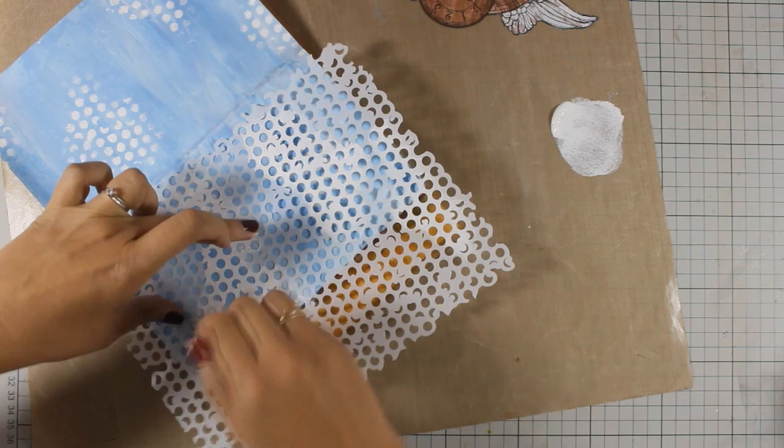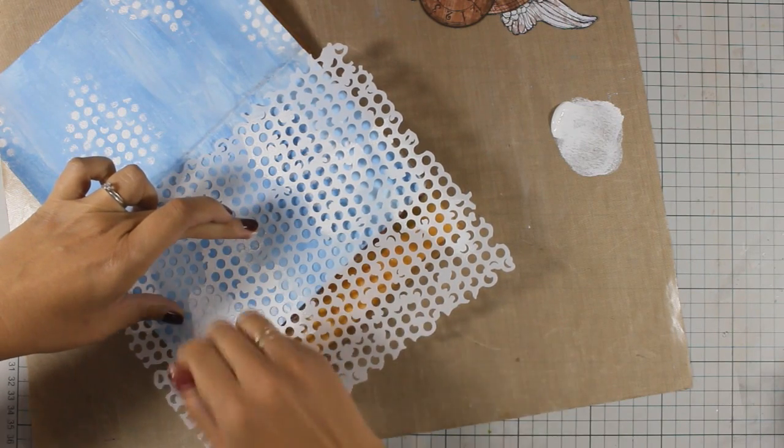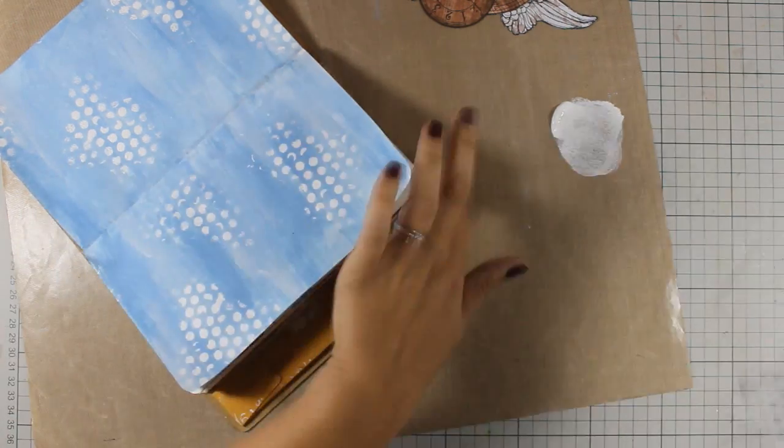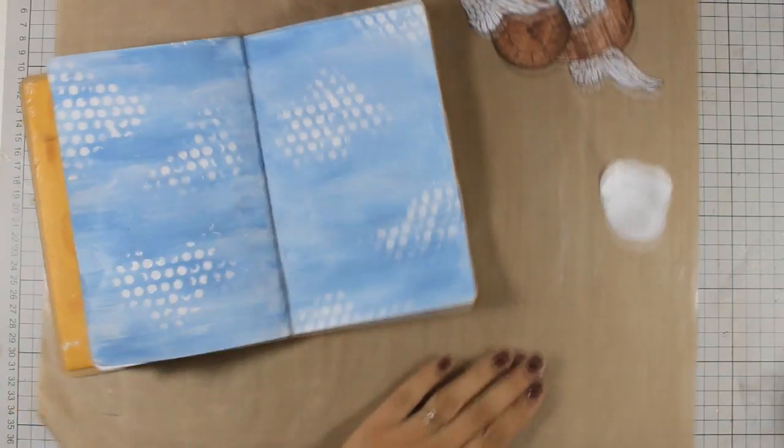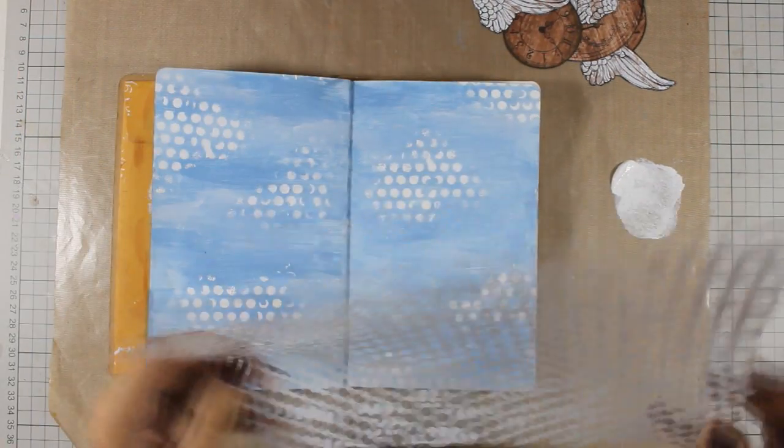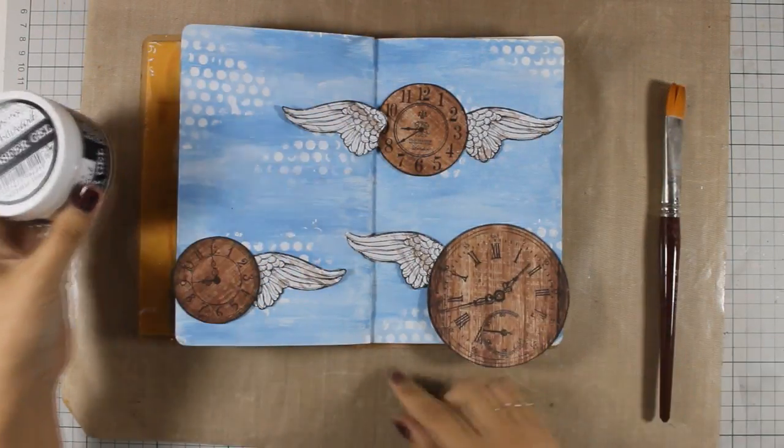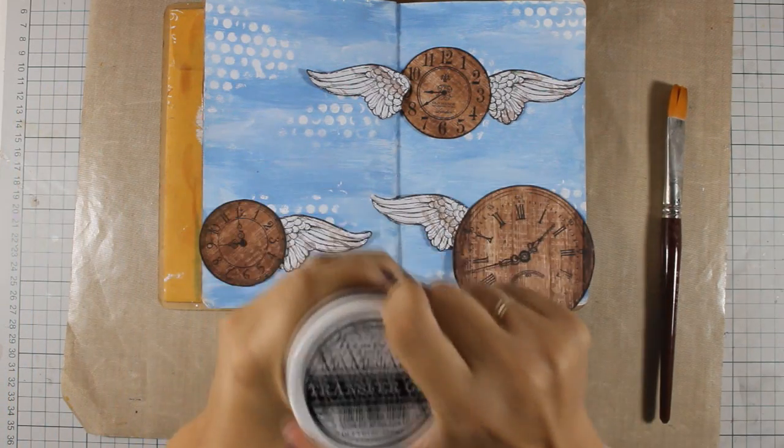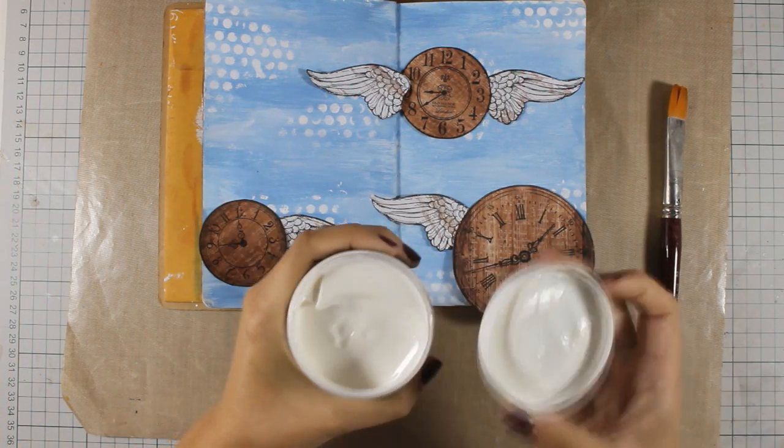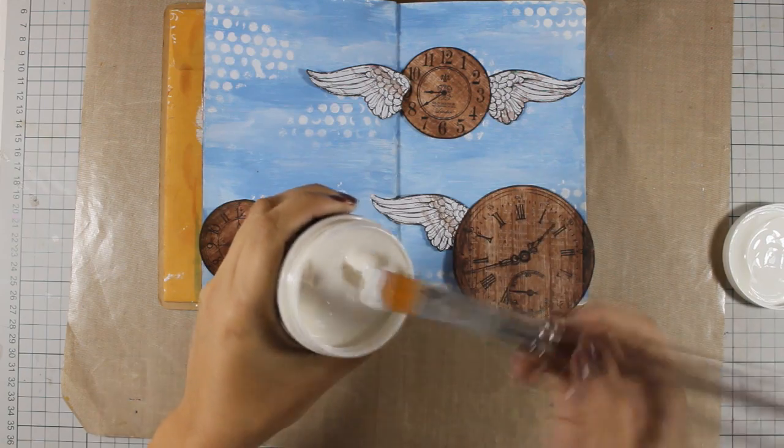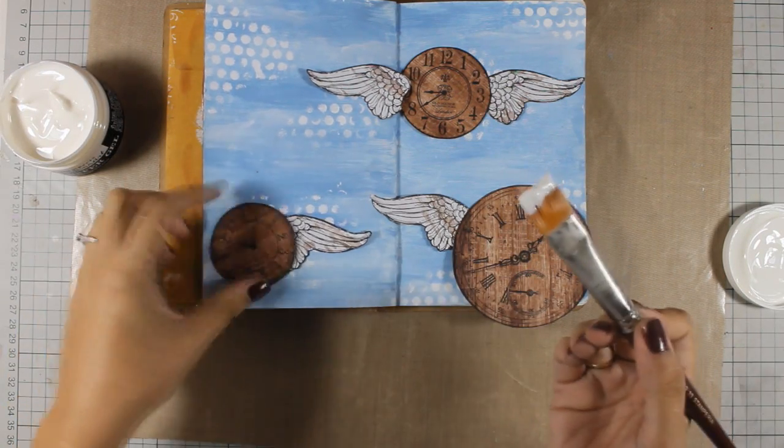Of course you can have the exact same results plus three-dimensional look if you use a spatula and apply over the stencil in different areas some embossing paste or modeling paste. Once everything is dry I am going to use my glue and stick everything down. I have decided where the clocks and the wings are going to go.